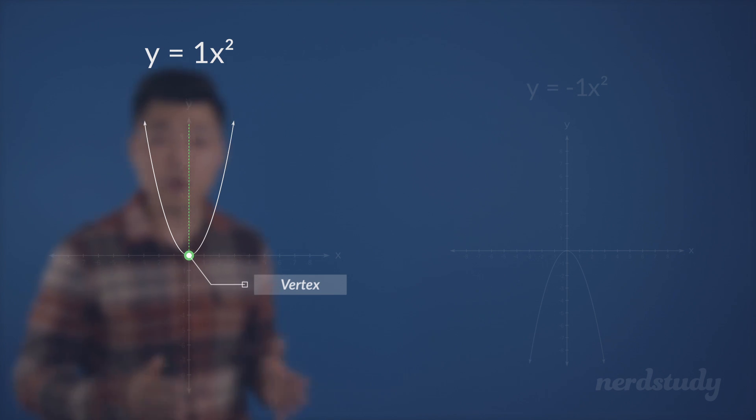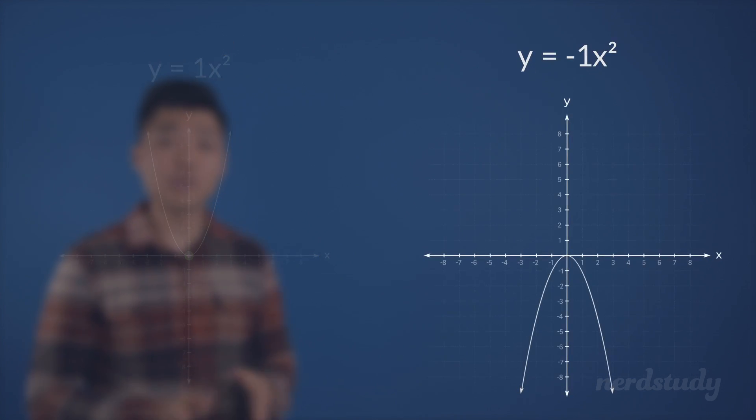It is important to note, however, that the vertex is not always the lowest point. After all, we did just learn that a negative a value would yield us a parabola that opens downwards. Aha!